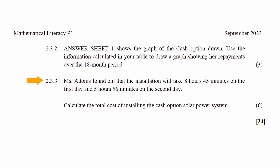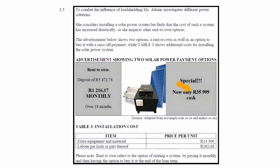Question 2.3.3 states that Ms. Adonis found that the installation will take 8 hours and 45 minutes on the first day and 5 hours and 56 minutes on the second day. You have to calculate the total cost of installing the cash option solar power system. The total cost is the sum of the cash price of R35,999, plus extra equipment and materials of R14,300, plus the total labour cost to install the system.